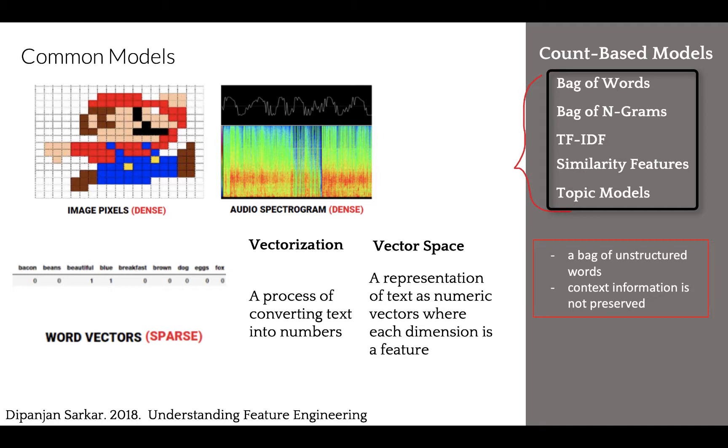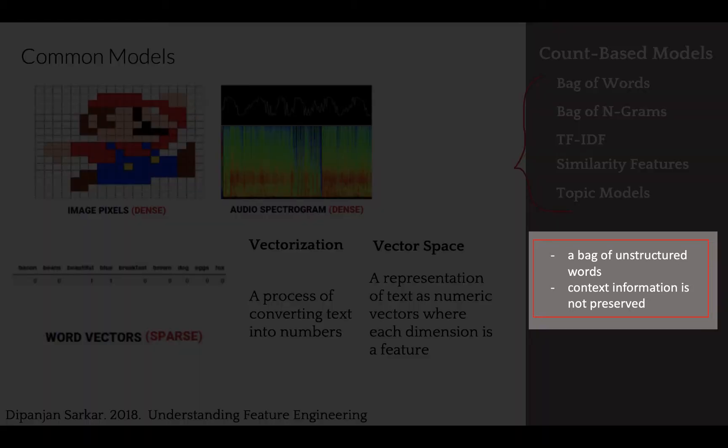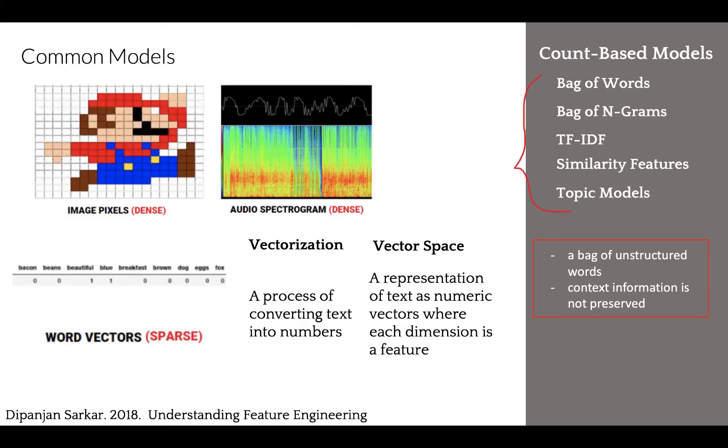While they are effective methods for extracting features from text, due to the inherent nature of the model being just a bag of unstructured words, we lose additional information like semantics, structure, sequence, and context around the words in each text document.